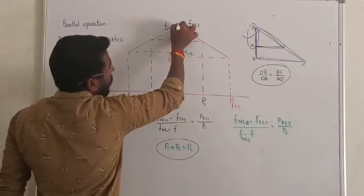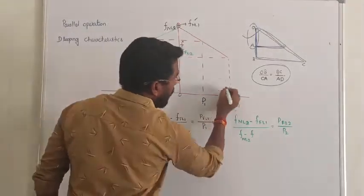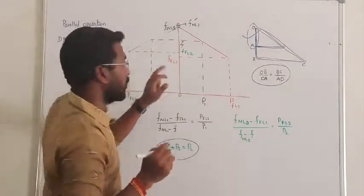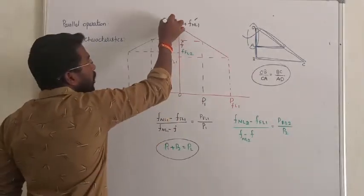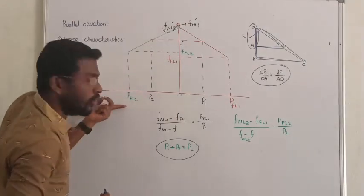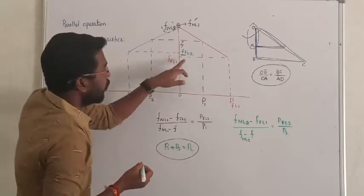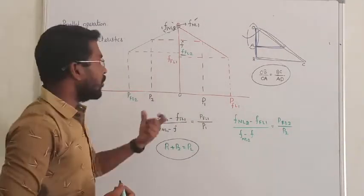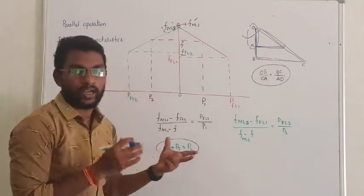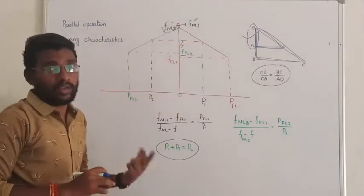Alternator 1 has a no load frequency, and alternator 1 has a full load power with a corresponding full load frequency. Similarly, alternator 2 has a no load frequency given, and when loaded fully, alternator 2 has a full load power with a corresponding full load frequency. Alternators 1 and 2 are going to share a certain load, and there is a corresponding frequency for that shared load.